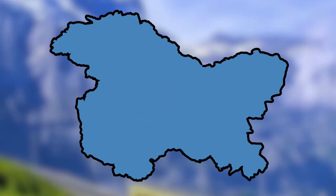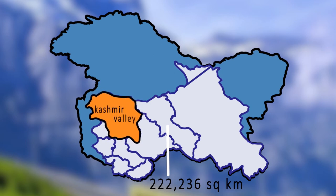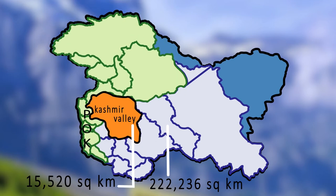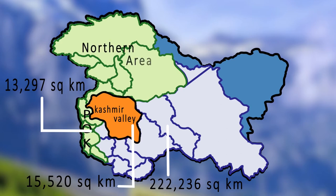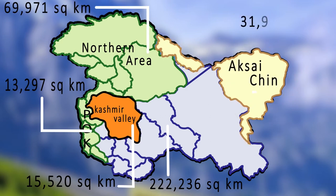Areas of the component territories are: Jammu and Kashmir, 2,22,236 square kilometers; the Kashmir Valley, 15,520 square kilometers; Pakistan-occupied Kashmir, 13,297 square kilometers; northern areas, 69,977 square kilometers; and Aksai Chin, 31,945 square kilometers.